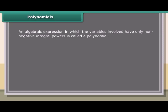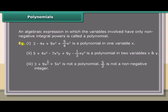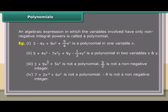Polynomials: An algebraic expression in which the variables involved have only non-negative integral powers is called a polynomial. Examples: (1) 3 − 4x + 9x² + (5/4)x³ is a polynomial in one variable x. (2) 5 + 4x² − 7x²y + 9y − (1/3)xy² is a polynomial in two variables x and y. (3) 3 + 9x^(5/2) + 5x² is not a polynomial, since 5/2 is not a non-negative integer. (4) 7 + 2x^(−8) + 6x² is not a polynomial, since −8 is not a non-negative integer.